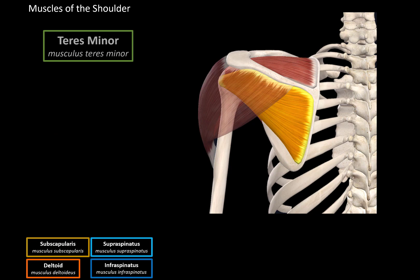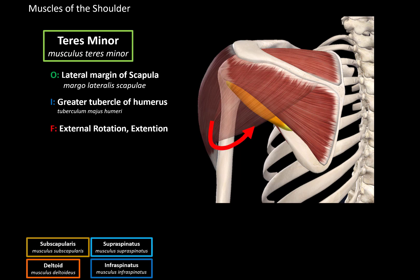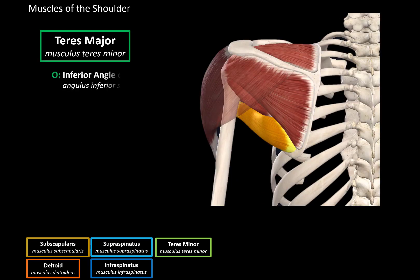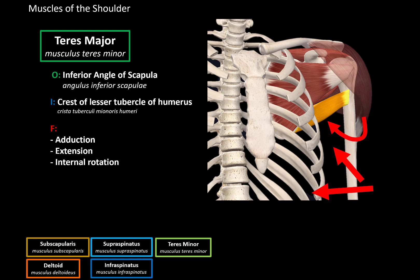Then we have the teres minor. This muscle originates from the lateral margin of the scapula and inserts at the greater tubercle of the humerus. When it contracts, it externally rotates the arm and also extends the arm backwards. Our last muscle is the teres major, which originates from the angle of the scapula, goes to the front, and inserts at the crest of the lesser tubercle of the humerus. When these muscle fibers contract, they pull the arm towards the body — adduction — extend the arm backwards, and internally rotate the arm.